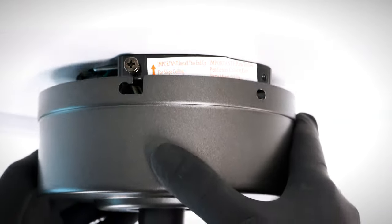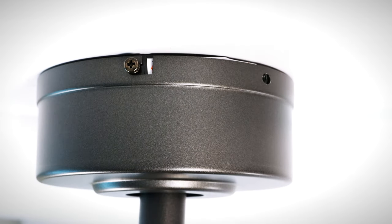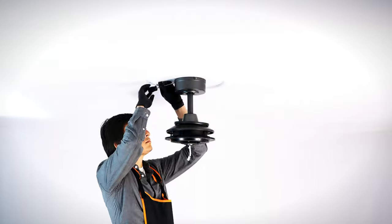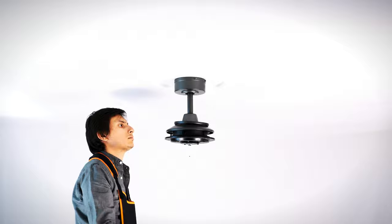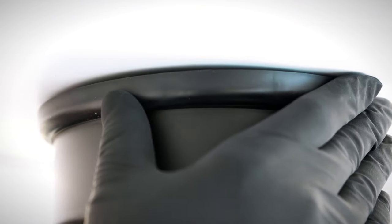Align and twist the canopy over the hanger bracket screws. Insert the removed screws and tighten all screws securely. Align and twist the canopy ring over the screws.